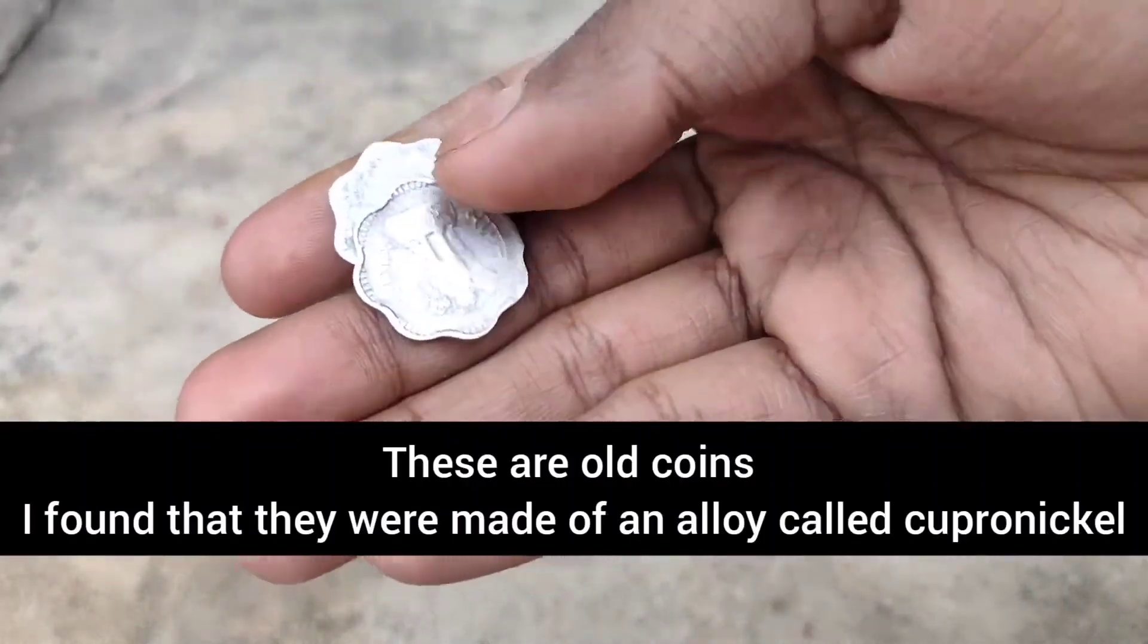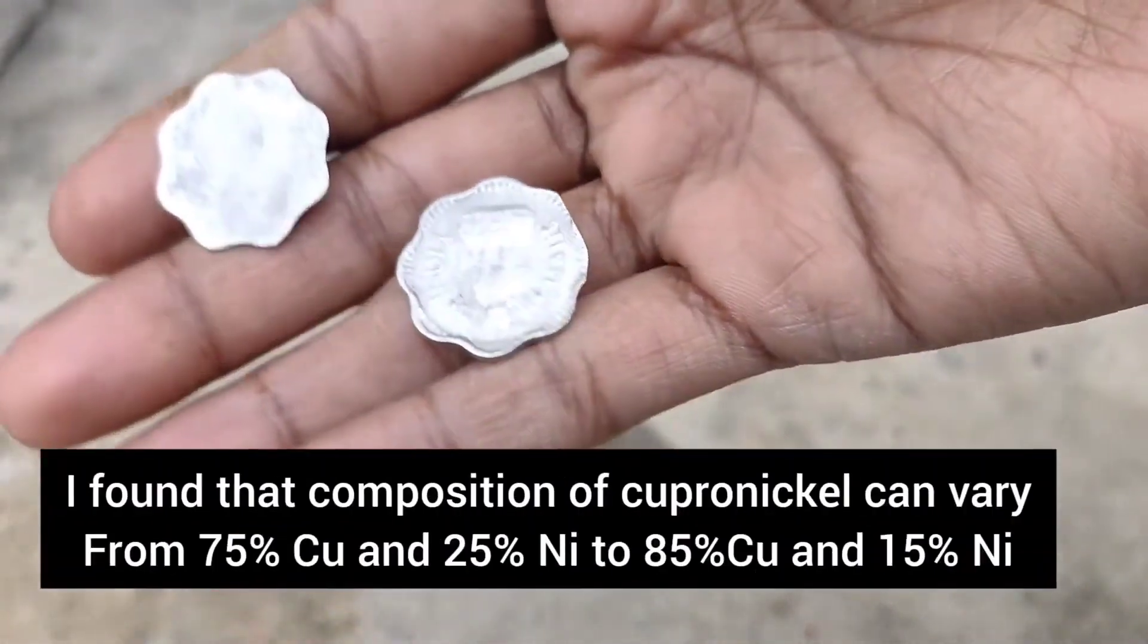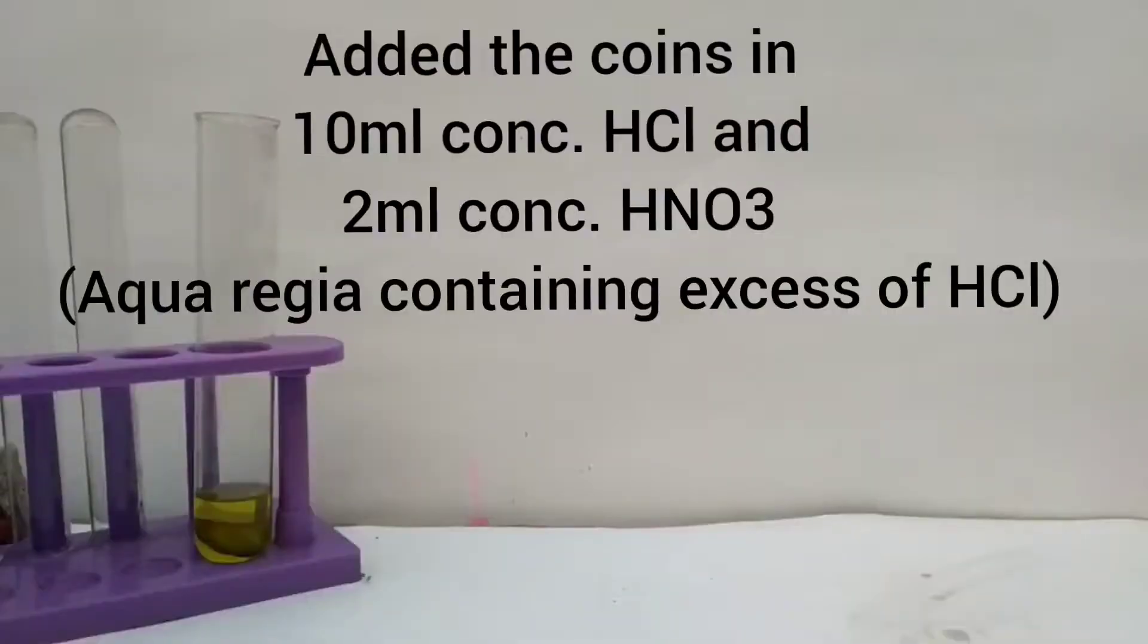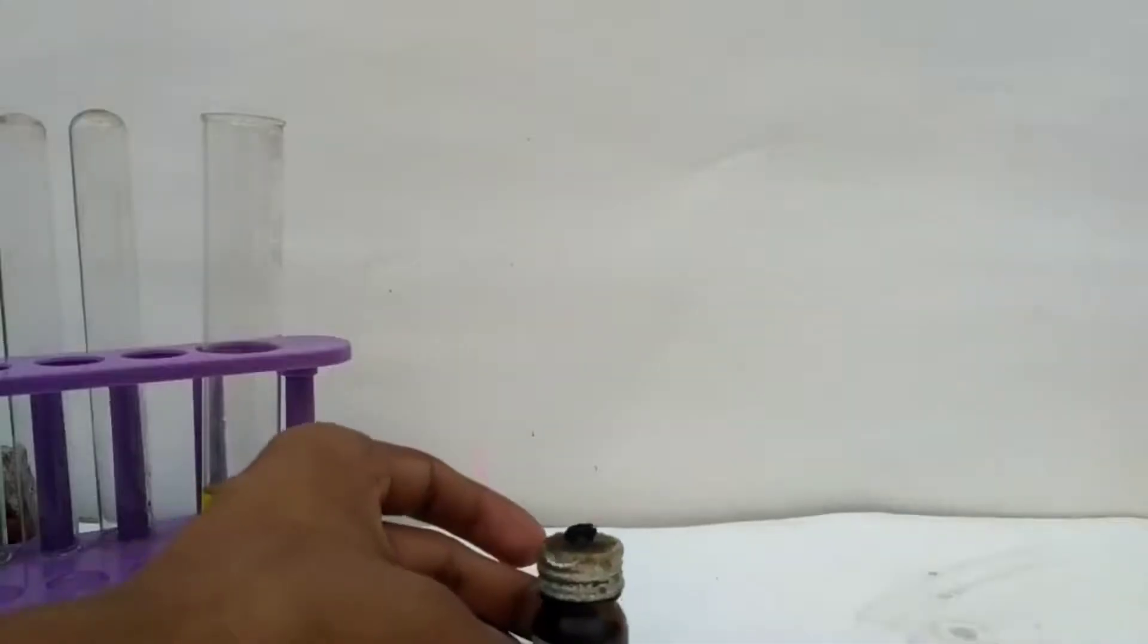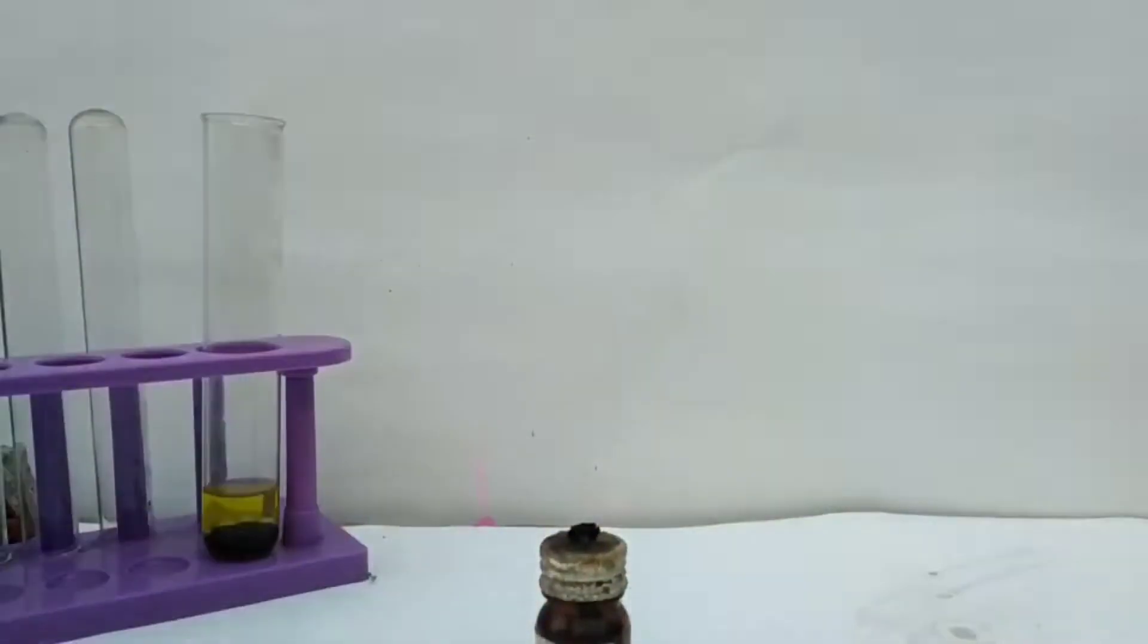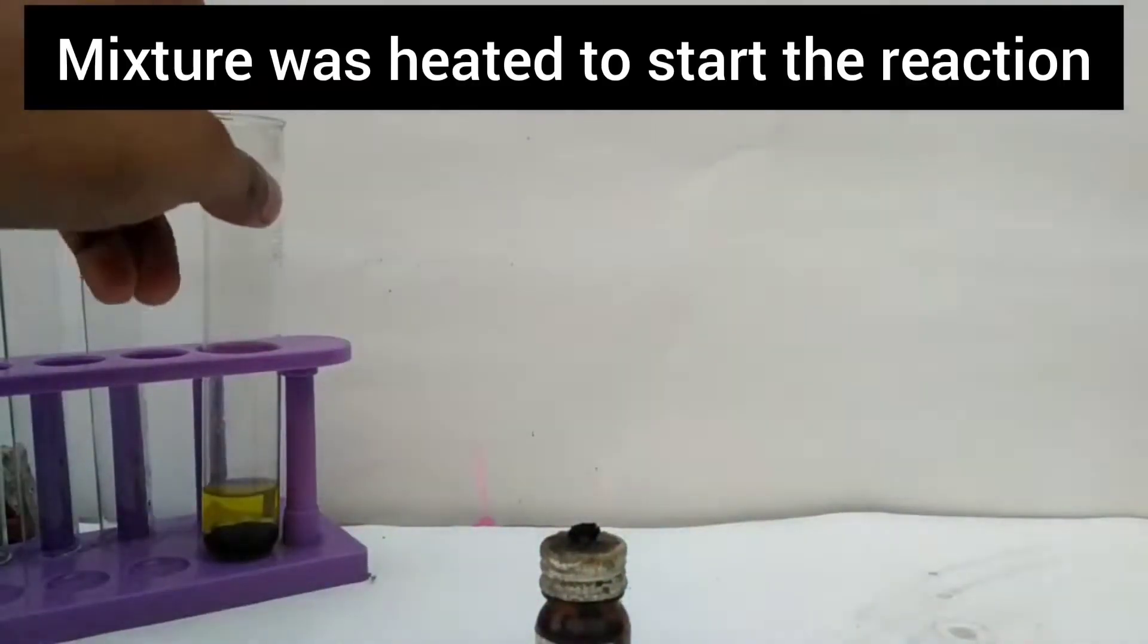I had these old coins and found that they were made of an alloy called cupro-nickel, so I decided to extract nickel from the coins. They contain 75% copper and 25% nickel, or it could range from 85 to 15% copper and nickel.